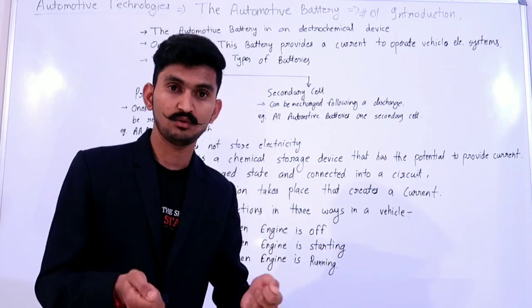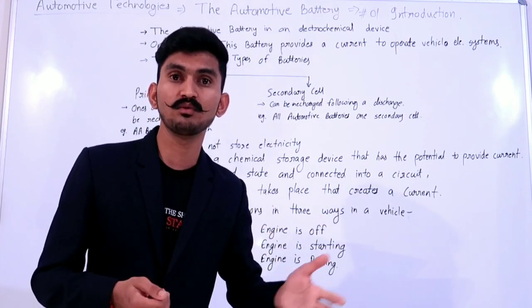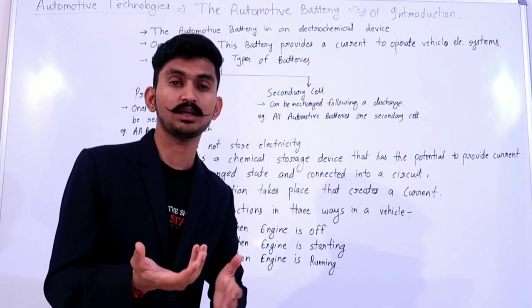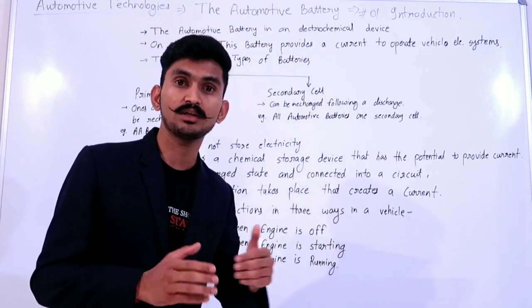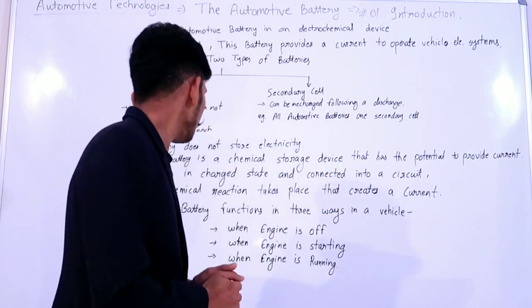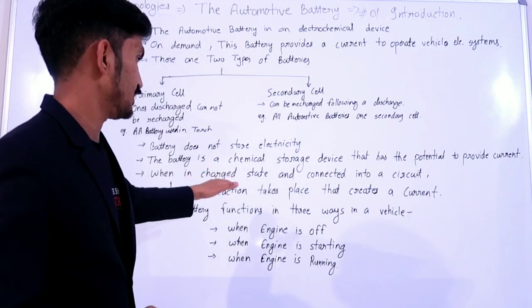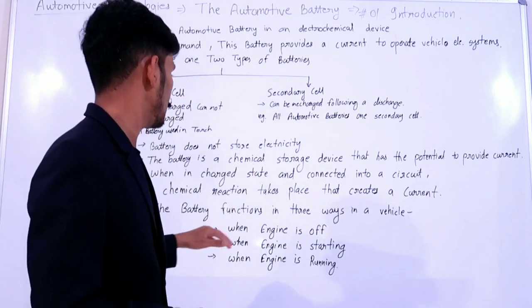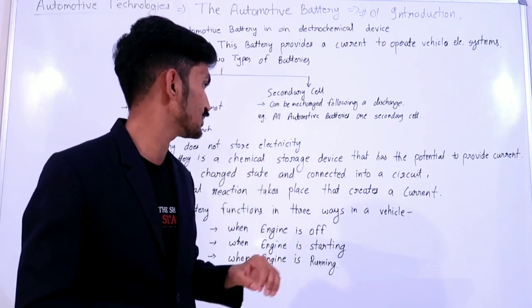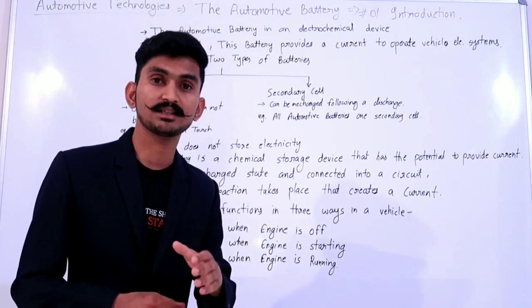When you check the voltage, you say this is a 12-volt battery, which is a potential difference that creates a current. When in a charged state and connected into a circuit, a chemical reaction takes place that creates current.